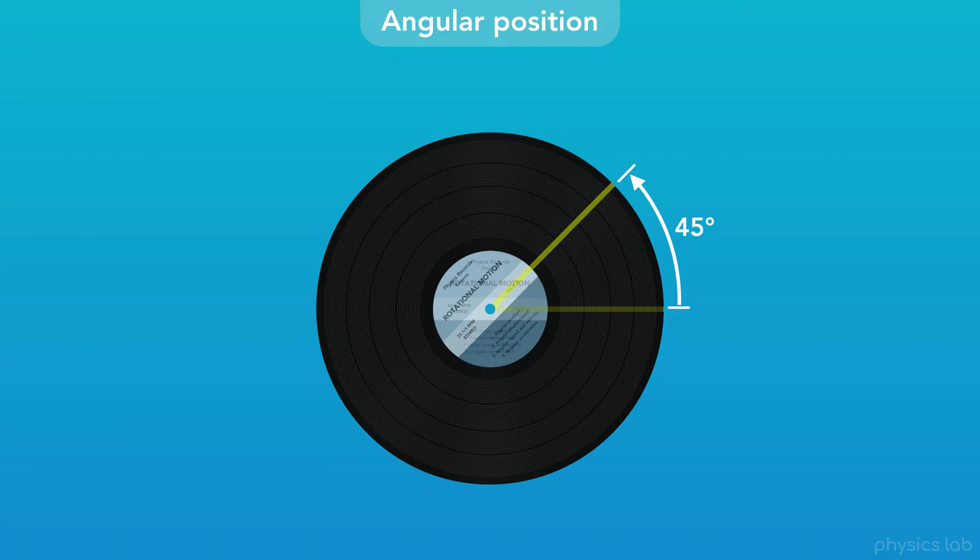For rotational motion, we're going to be using angles to describe how an object is moving, which is why we call this the angular position, and we're using the angular description of motion.